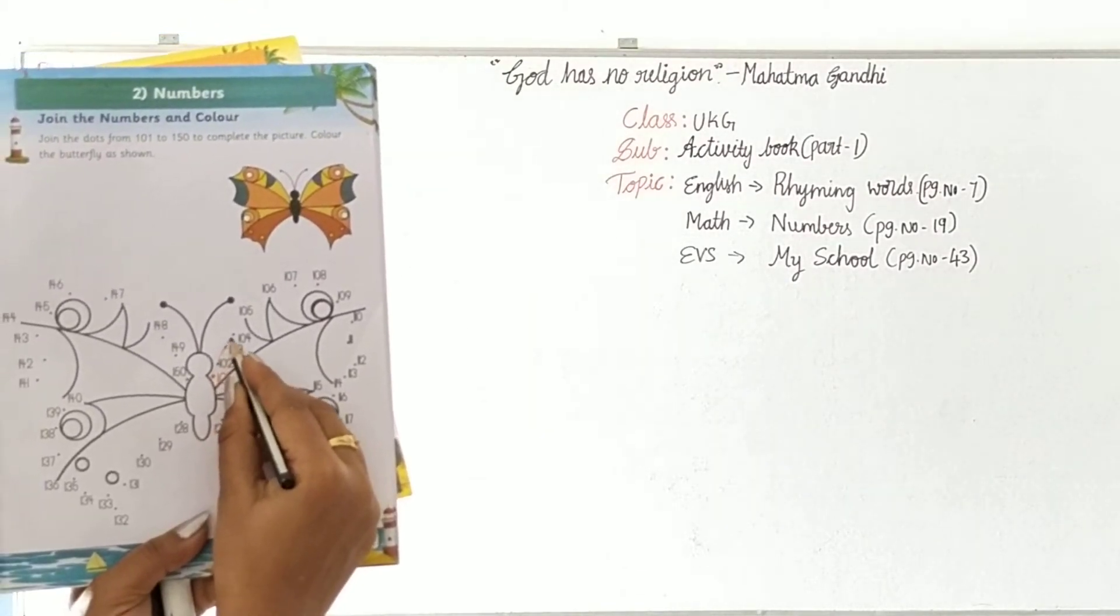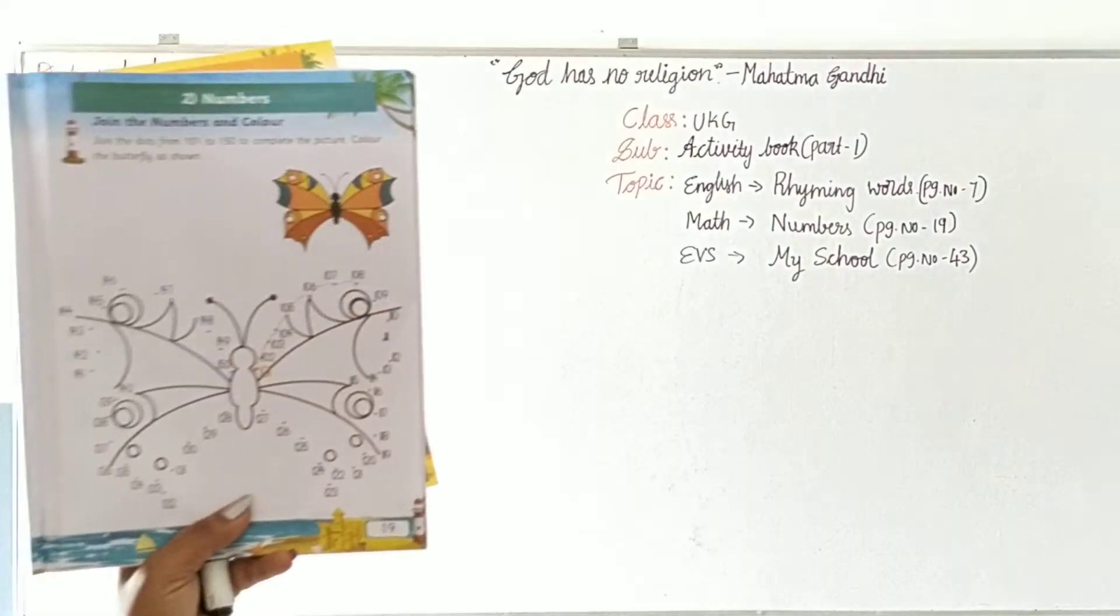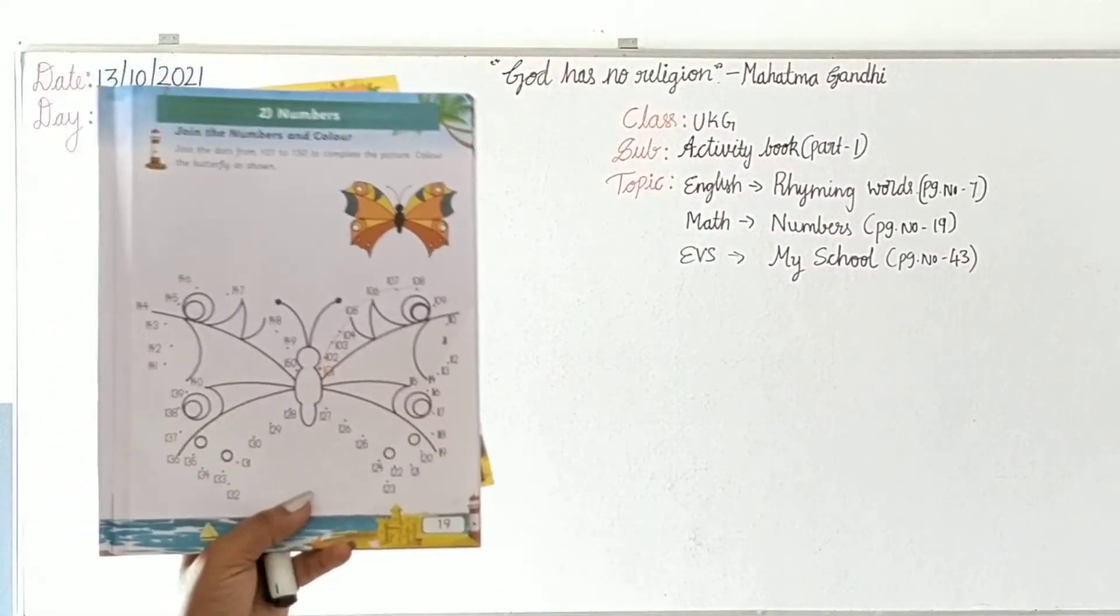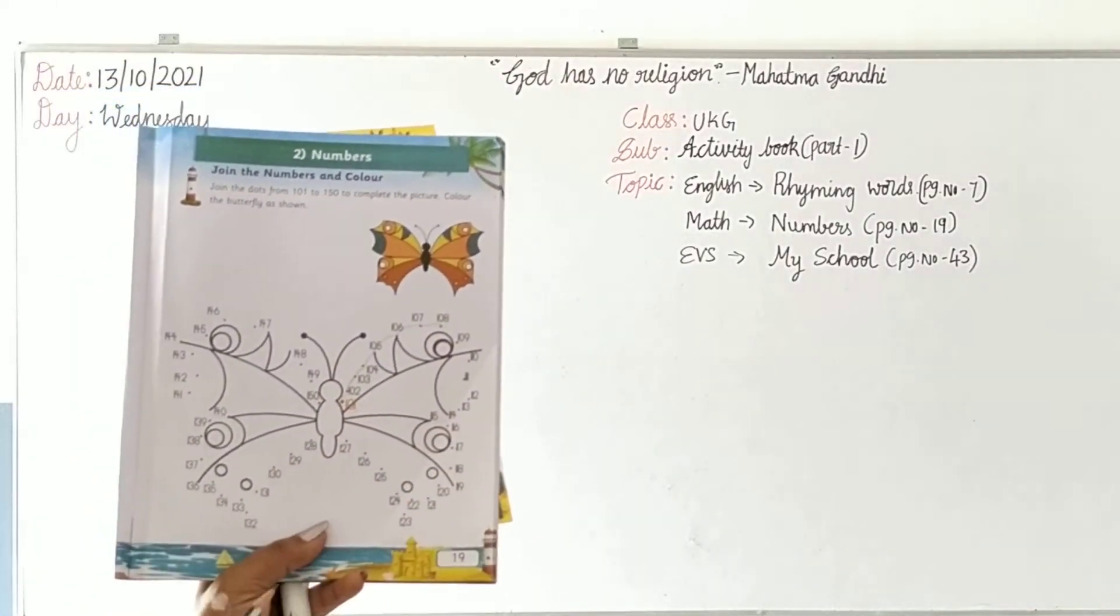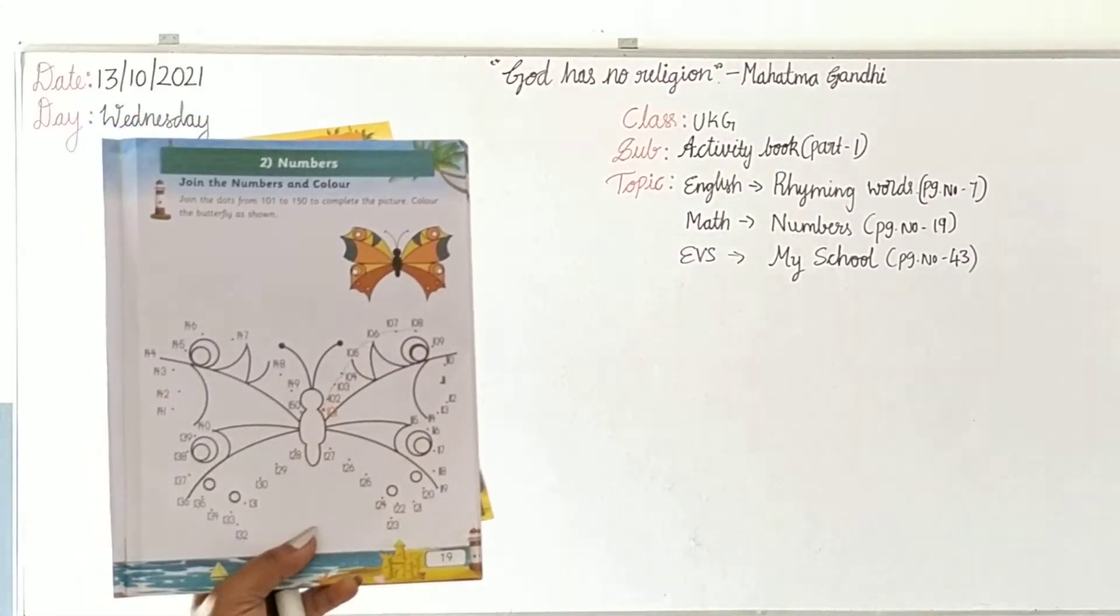The hundred and one has been given in the orange or red colour. You have to start from 101, 102, 103, 104, 105, 106, 107, 108, then 109, 110, 111, 112.